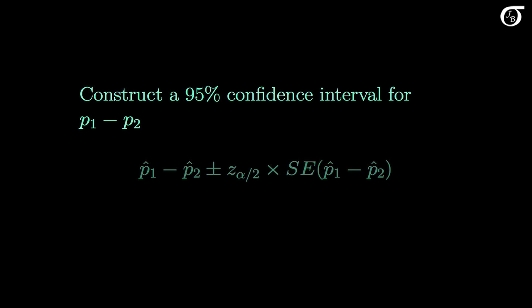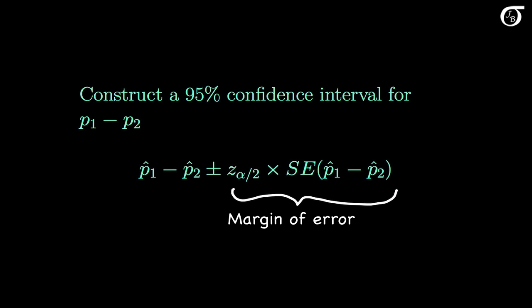First, let's construct a confidence interval for the difference in population proportions. Here's the formula. This is a large sample method, and it's not appropriate for very small sample sizes. In the example the sample sizes were only 38 and 39 — we'd prefer them to be a little larger, but overall the method is going to work reasonably well for this example. For the interval calculation we take our best estimate of the difference in population proportions, which is the difference in sample proportions, and we add and subtract the appropriate margin of error. The standard error can be a bit of a hassle to calculate, but once we have that, the calculations are pretty simple.